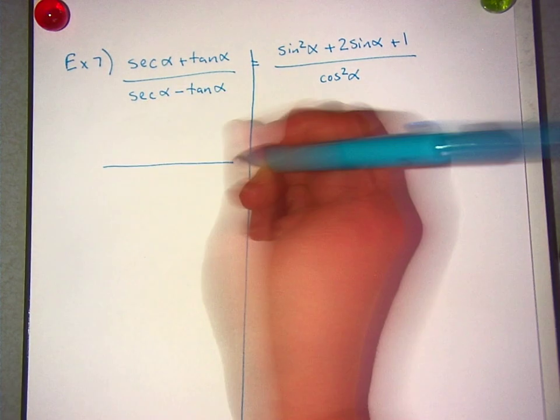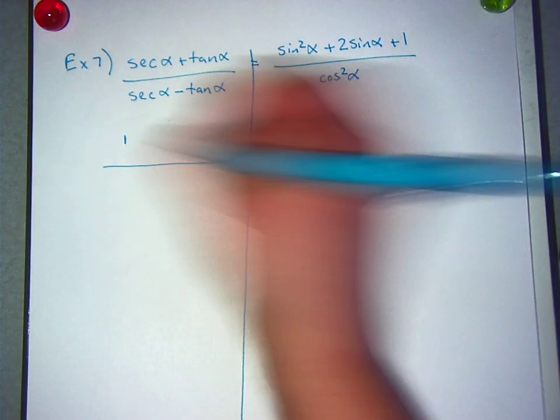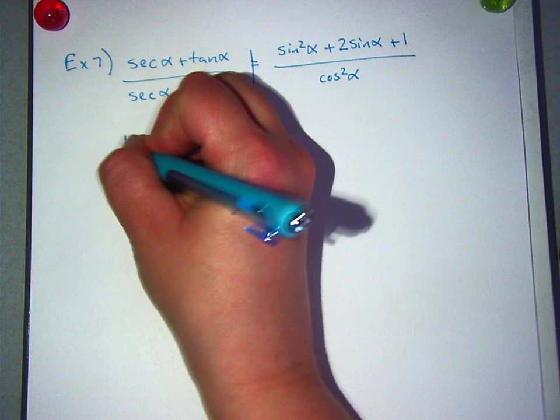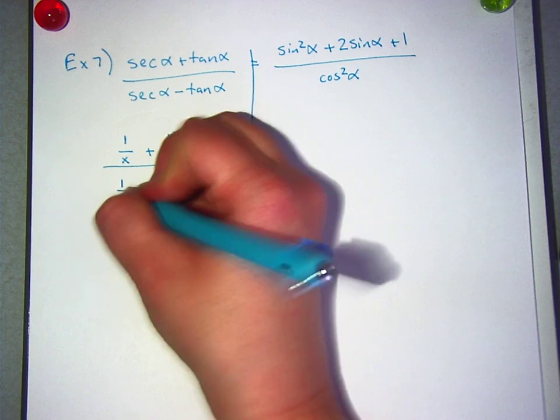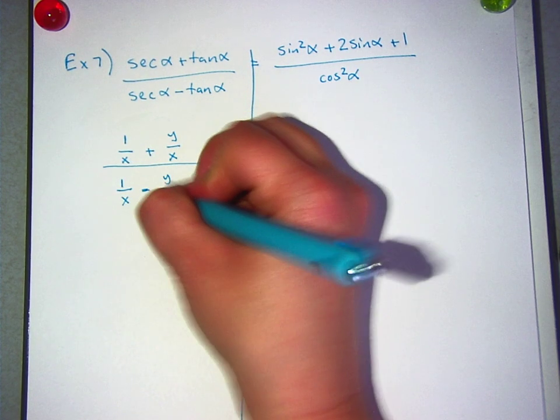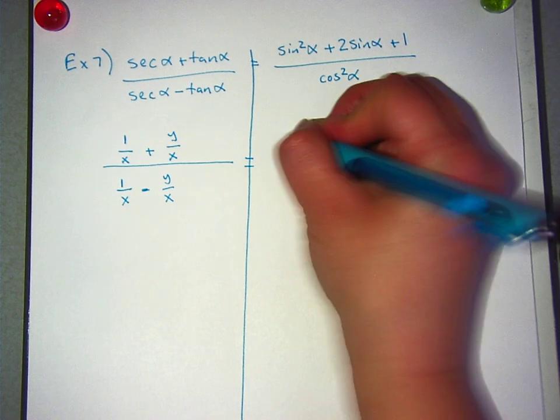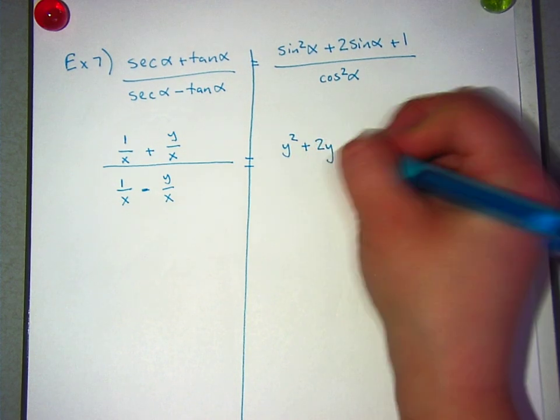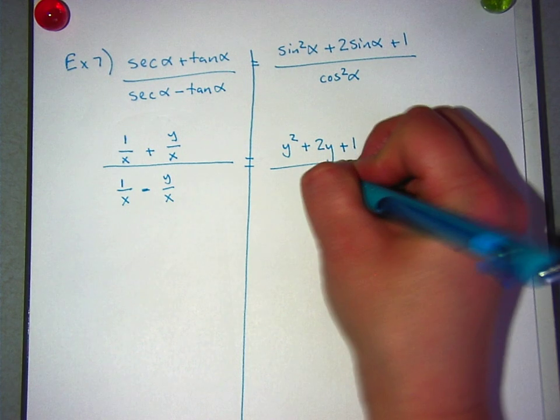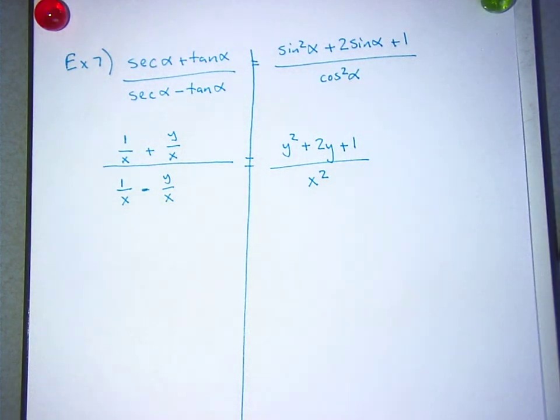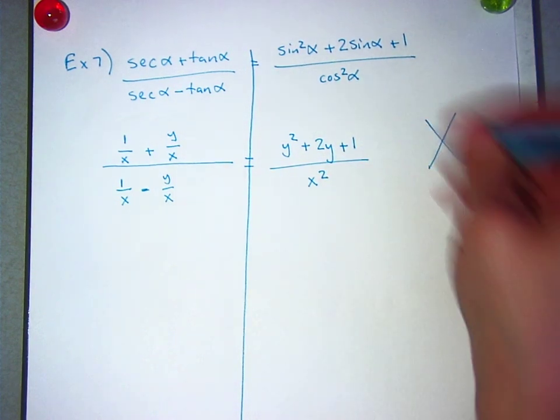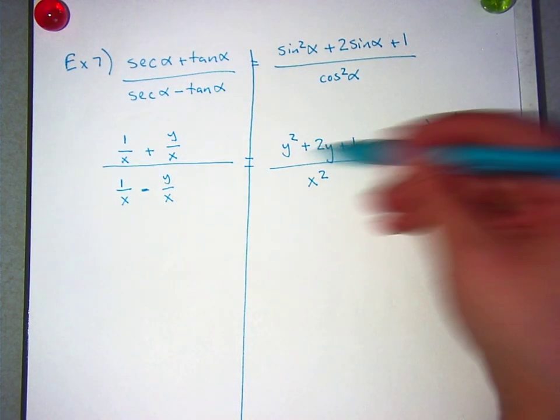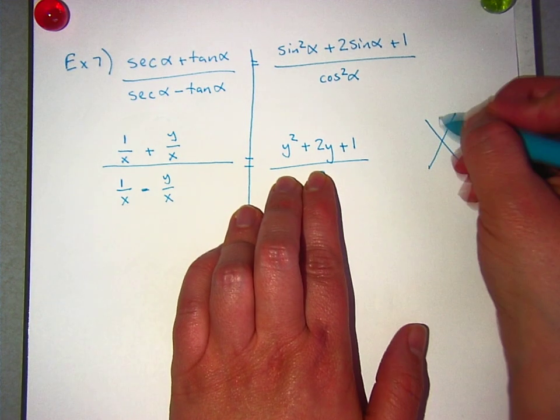So let's start there. On this side, secant is what? One over x. On the bottom, it is one over x minus y over x. And over here, we've got y squared plus two y plus one over x squared. So it's hard to see, but what Ryan was saying is this top right can be factored. In fact, it's just a simple x problem. What's the number that goes on top? One. And on the bottom? Two. We're looking for two things that multiply to get one but add to get two.